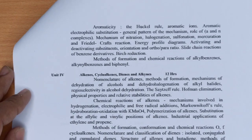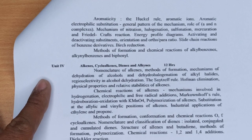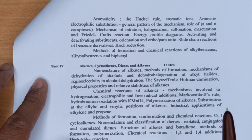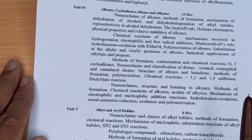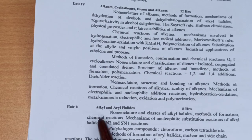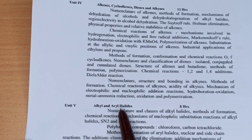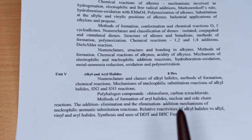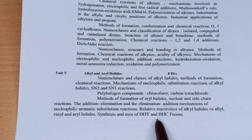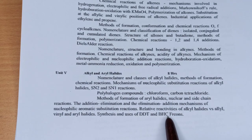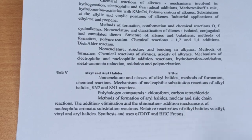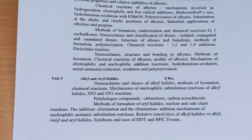Unit 4 में Alkenes, Cyclo-Alkenes, Dienes and Alkynes हैं — ये सभी BSC first year के syllabus में हैं। Unit 5 में Alkyl and Aryl Halides हैं, जिसमें SN1 और SN2 reactions काफी important हैं। DDT का structure, BHC यानी Benzene Hexachloride वगैरा भी पढ़ने को मिलेगा। यह पाँच units हैं Organic Chemistry की।